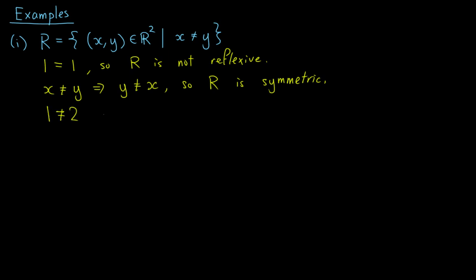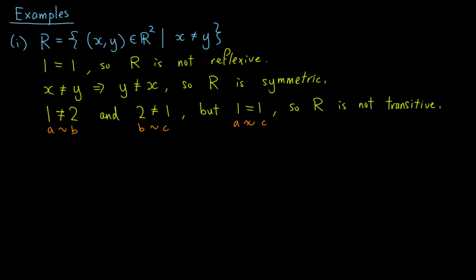Now, 1 is not equal to 2, and 2 is not equal to 1, but 1 equals 1. This means that A is related to B and B is related to C, but A is not related to C. So R is not transitive.